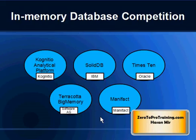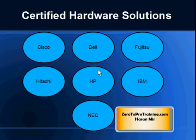SAP HANA is available as an appliance, meaning SAP HANA and peripheral components are installed on certified hardware. The certified hardware vendors that offer platforms for SAP HANA include Cisco, Dell, Fujitsu, Hitachi, HP, IBM, and NEC.